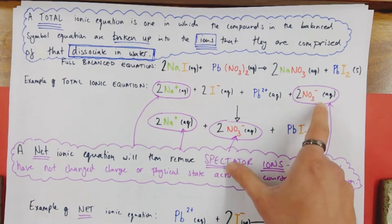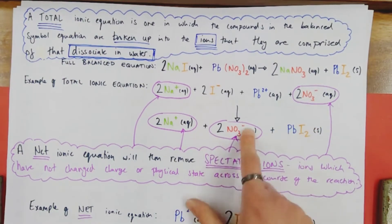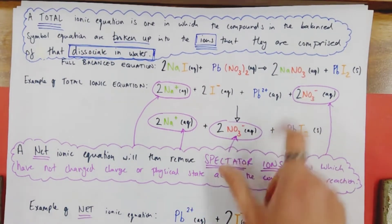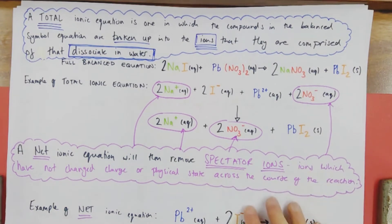At the beginning of my reaction, I have two soluble aqueous nitrate ions, which are here. And at the end of my reaction, I have two aqueous nitrate ions with a minus-one charge. They haven't changed their redox properties. They haven't changed state. They are spectating.